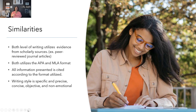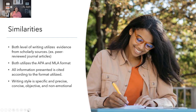Another similarity is that the writing style is specific, precise, concise, objective, and non-emotional — whether you're a graduate or undergraduate student. Make sure you're not putting your opinion in your writing. Your opinion has nothing to do with your writing; it should be based on the sources you have obtained. Especially at the doctorate level, opinions are not negotiable at all — it's literally about sources, sources, sources.